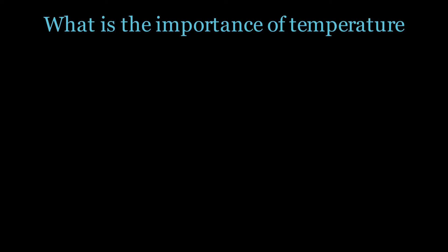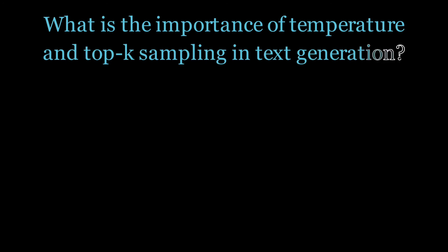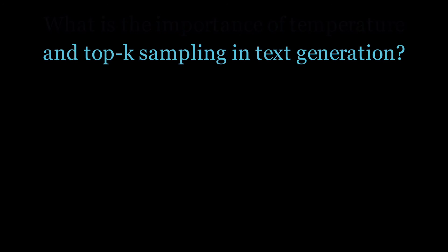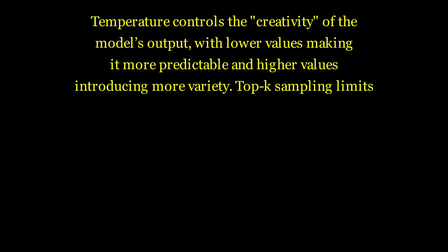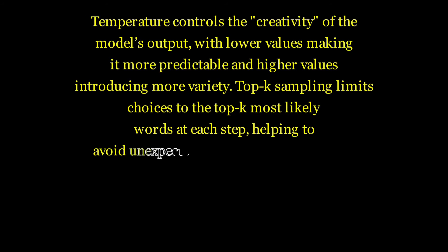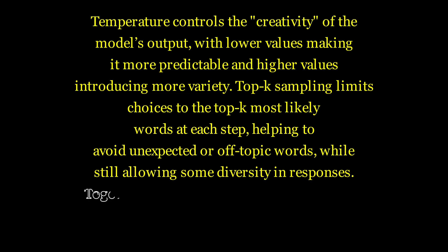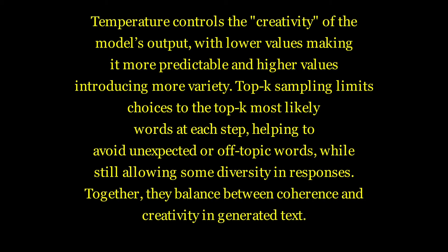What is the importance of temperature and top-k sampling in text generation? Temperature controls the creativity of the model's output, with lower values making it more predictable and higher values introducing more variety. Top-k sampling limits choices to the top most likely words at each step, helping to avoid unexpected or off-topic words while still allowing some diversity in responses. Together, they balance between coherence and creativity in generated text.